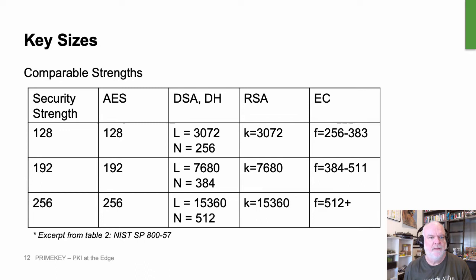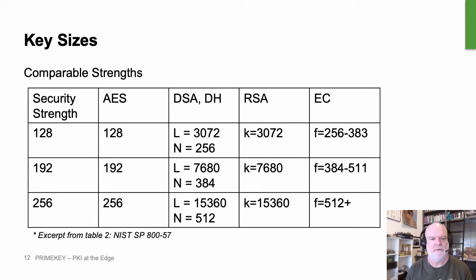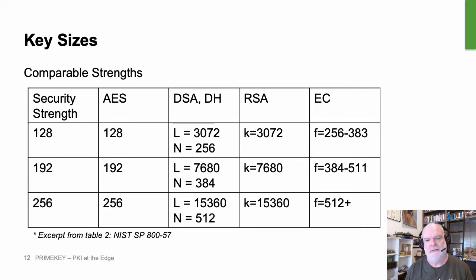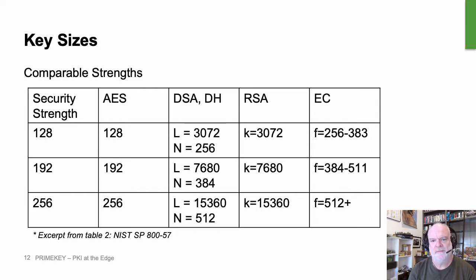Regarding key sizes, the main thing to remember is that when talking about security strength for public-private keys, it's generally radically different to the actual key size in bits. While a symmetric algorithm like AES has a 128-bit key that should be 128 bits secure, with Diffie-Hellman, RSA, or elliptic curve the numbers vary. RSA at 3072 bits is 128 bits secure. EC at 256 bits gives you the same — 128 bits of security.